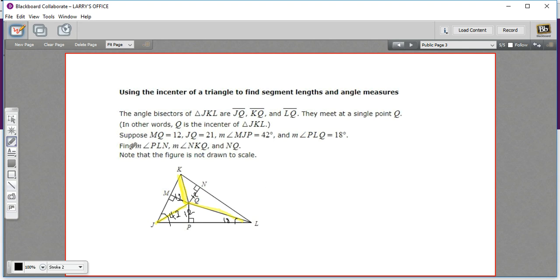And then we're supposed to find PLN, that angle, angle NKQ, and the length of NQ. Well, let's just start with the length of NQ. NQ is right here. It's one of these in-radii. So we know that's going to be 12. We've already labeled that. So NQ is 12.